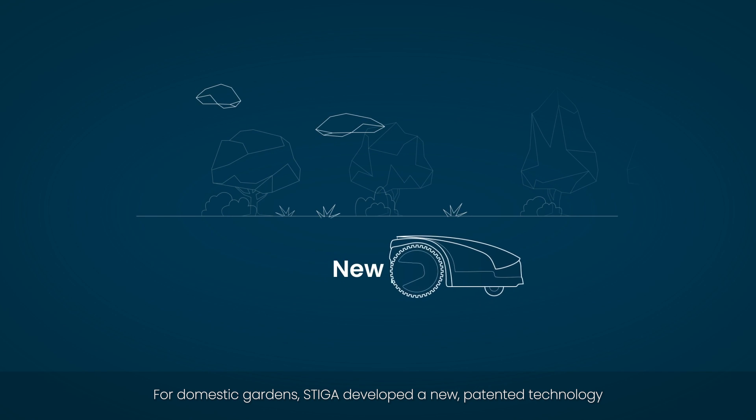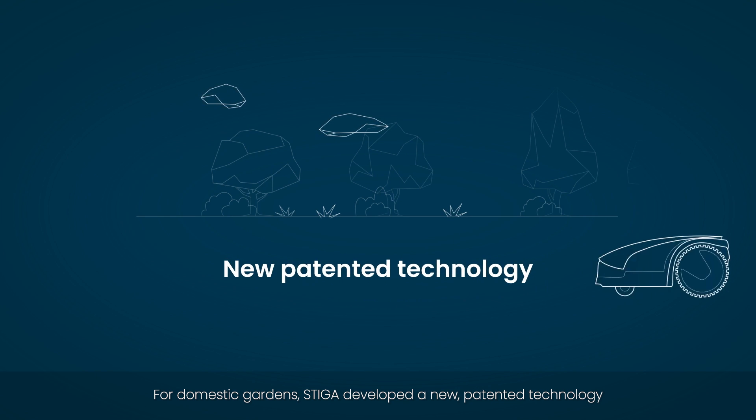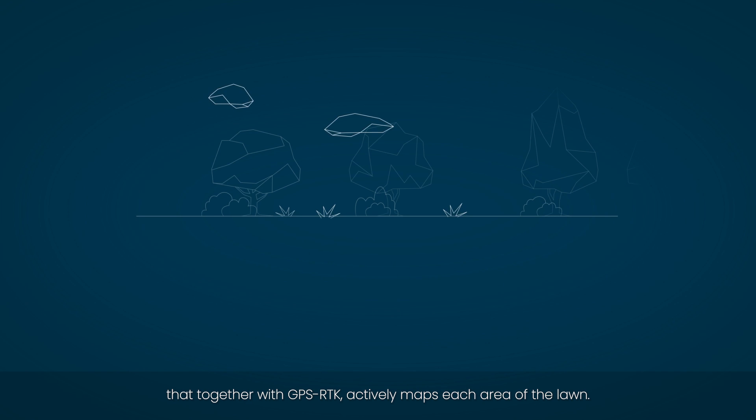For domestic gardens, Steger developed a new patented technology that together with GPS RTK actively maps each area of the lawn.